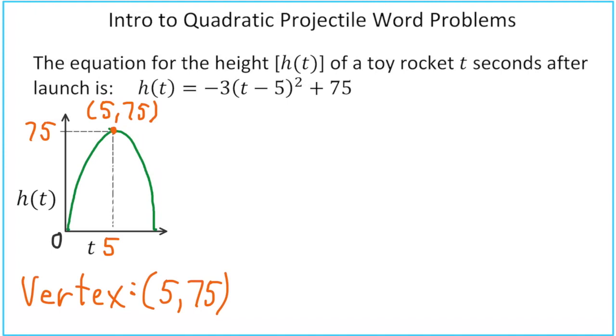Now you might notice that both sides of the parabola from the vertex are symmetrical. So the number where the rocket lands would be a 10. Now that we've got our diagram all labeled, let's take a look at the common questions that get asked in these quadratic projectile word problems.